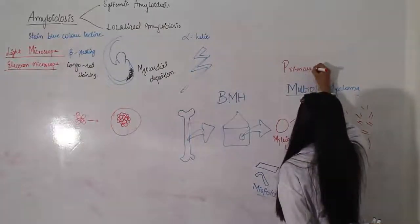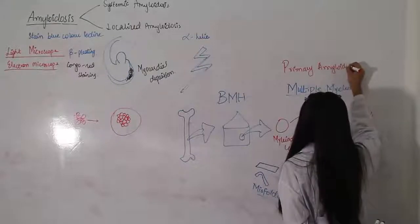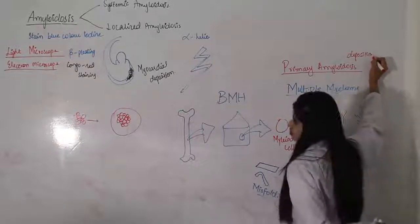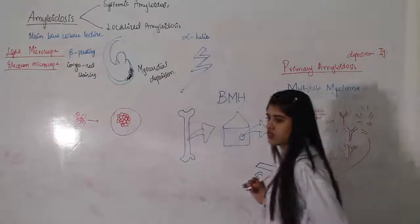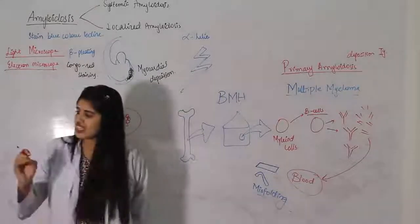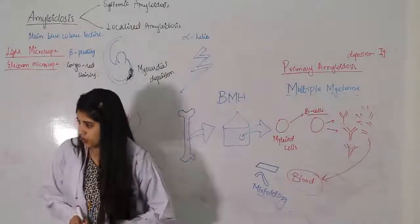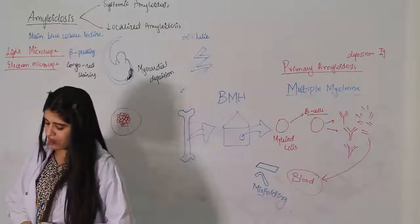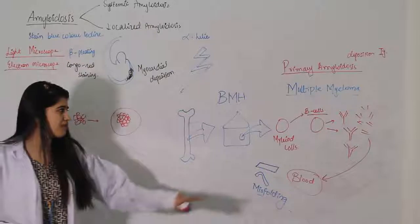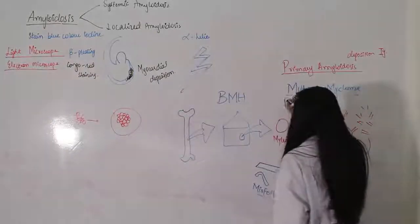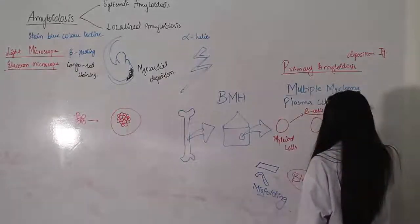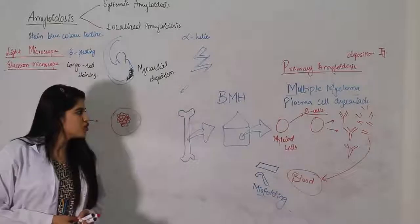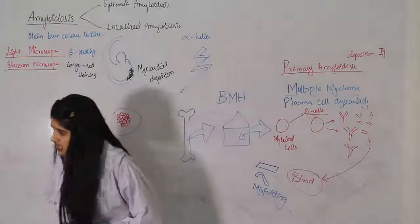Primary amyloidosis involves the deposition of immunoglobulin light chains. Excess of everything is bad - there is excess of light chains that causes deposition. The second condition is plasma cell dyscrasias. This is the same condition as multiple myeloma or plasma cell dyscrasias - this is AL amyloidosis deposited there. This condition is called multiple myeloma, also called plasma cell dyscrasias.